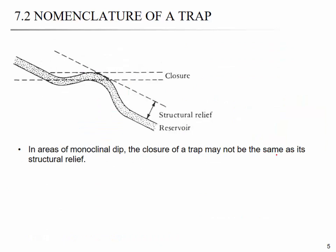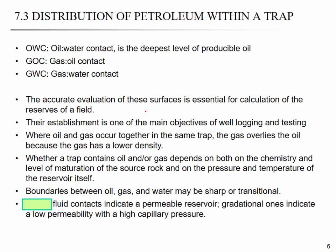In the Middle East, we have very thick pay. This anticline can be tilted. The closure is the vertical distance from the crest to the spill plane. In this case, the spill plane is around here, so the closure will be over here. Structural relief is here before it becomes tilted. Evaluation of the oil-water contact, gas-oil contact, and gas-water contact surfaces is essential for calculation of the reservoir, and their establishment is one of the main objectives of well logging and testing.